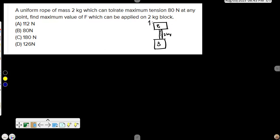force that can be applied, the maximum amount of force that can be applied on the 2 kg block such that the rope will not break. So first let us see the rope's diagram.